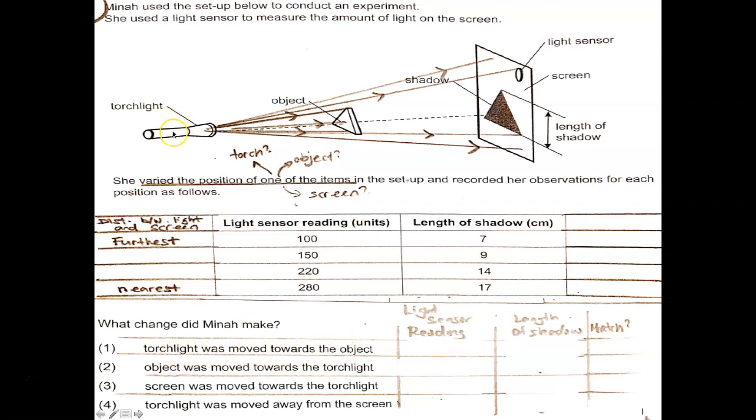So what if Mina moved the torchlight towards the object? If that is true, torchlight is moved towards the object, she should expect the light sensor reading to increase like this. So that should increase. Okay, so far it matches. If the torchlight was moved towards the object, the height of the shadow will also increase. Alright, this is what happens. And let's check this. It matches. So, so far, one seems to be the answer. But let's go on and read the rest.